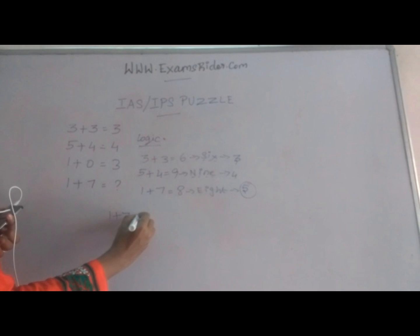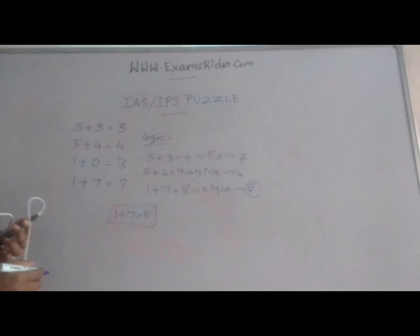So the answer is 1 plus 7 is equal to 5. Thank you for your support.